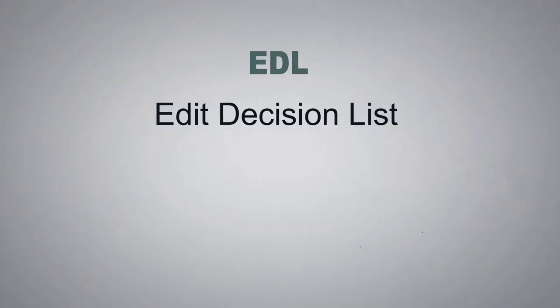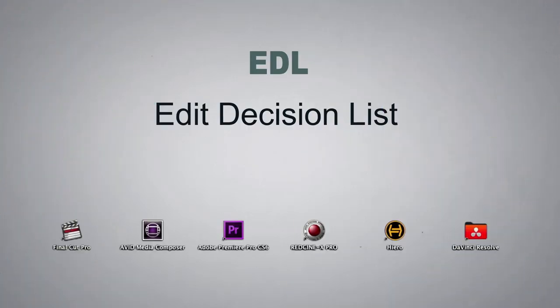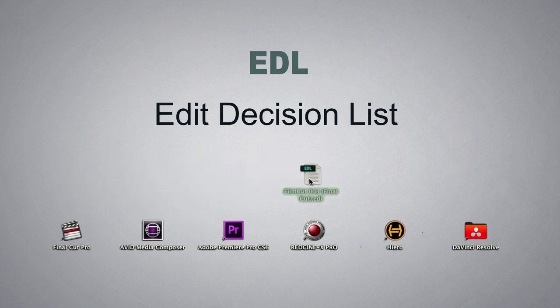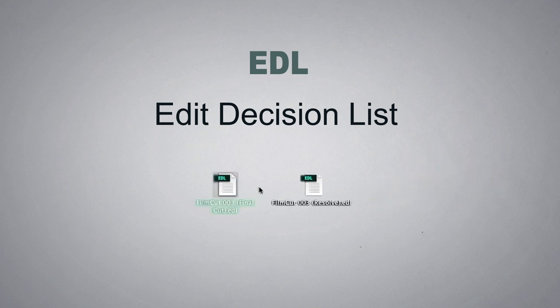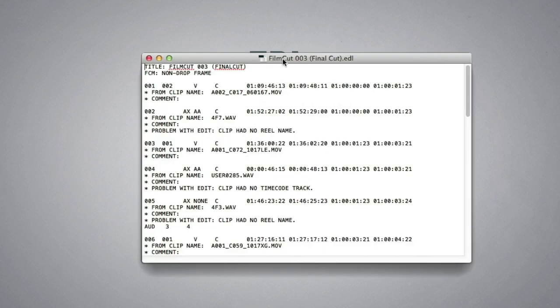An EDL, an editor's decision list, is basically an open source file format that allows edited sequences to be transferred from one application to another. However, it is important to note that the file does not contain any video footage itself. If we open an EDL, you'll see that it's simply metadata telling the software which video files to use, where the files are located, what the timecode in and timecode out is of each clip, and it also contains information such as which effects have been applied to the clips and the frame rate of the sequence.